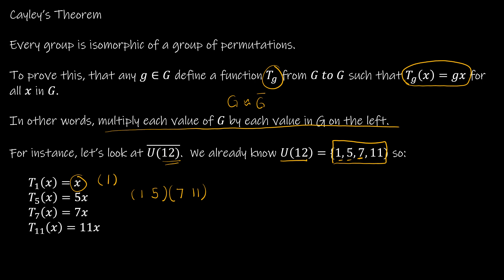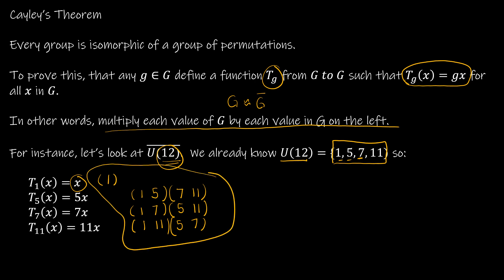For t_7: one times seven is seven, so one maps to seven. Seven times seven is forty-nine, which is one mod twelve, so seven maps to one. Five times seven is thirty-five, which is eleven mod twelve, so five maps to eleven. For t_11: one maps to eleven. Eleven times eleven is one hundred twenty-one, which is one mod twelve. Five times eleven is fifty-five, which is seven mod twelve. So again we get four values.